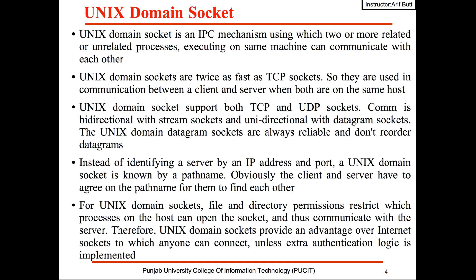Instead of identifying a server by an IP address and port, a Unix domain socket is known by a path name, and the client and server have to agree on the path name to find each other. For Unix domain sockets, file and directory permissions restrict which processes on the host can open the socket.